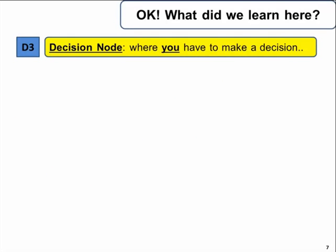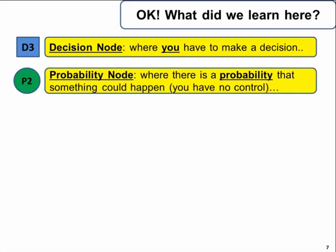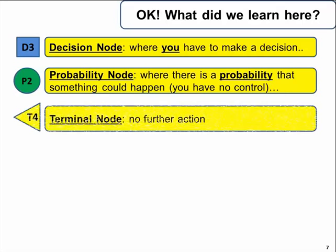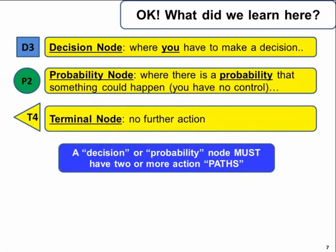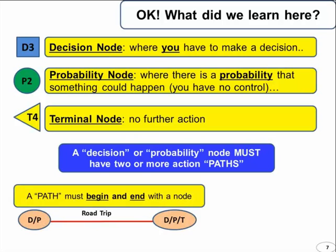Okay, what did we learn? Decision node is where you have to make a decision and it's a square node. A probability node is where there is a probability that something could happen and you have no control. In the decision node, you have the control. Probability node, you have no control. There's a probability that something could happen. We use a circle. And the terminal node is where we have no further action. And always remember, the path must begin and end with a node.